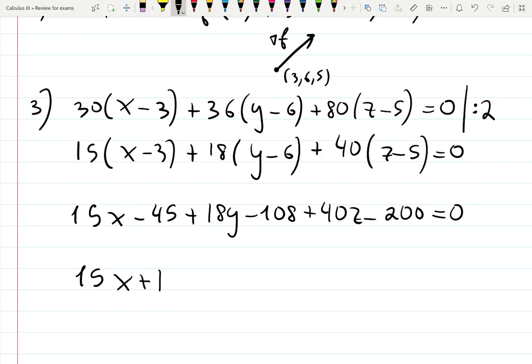Finally, the final form will look like this: 15x plus 18y plus 40z equals 45 plus 108 plus 200, which is 353. And this is the final answer.